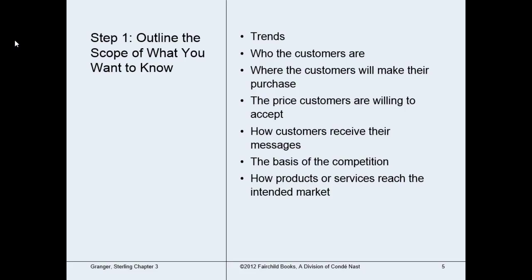Examples of other distribution channels would be party-based sales like the 31 Party or Jamboree. Next, you need to learn how much your customer will pay for your product or service and what they perceive as value — this is where you look at competitors' prices to determine your own pricing. You also need to think about how your customer will learn about you: do they use social media, go online, or use radio, television, or direct mail? What is the best way to reach your specific customer?